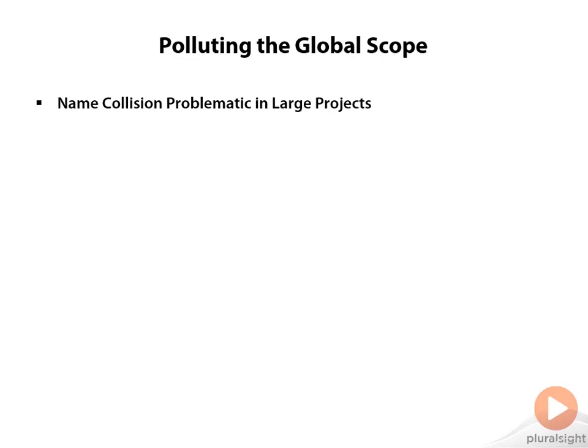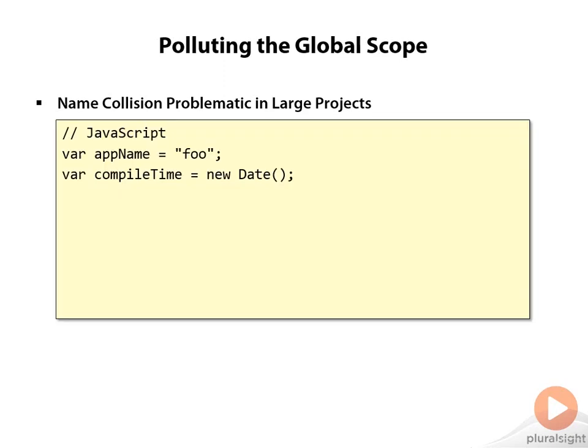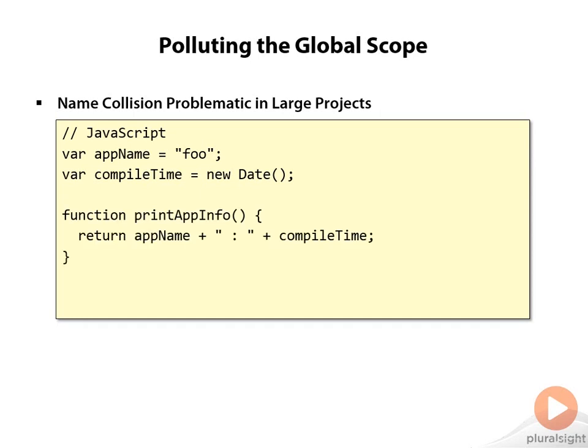The next topic we'll talk about is polluting the global scope. When you're working with large projects, if we're creating JavaScript in a lot of the ways we've looked at so far, we're creating a lot of things at that global scope. If we look at this example, we'll see that we have a couple of variables created at the global scope, as well as another function at that global scope.